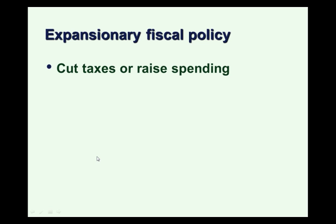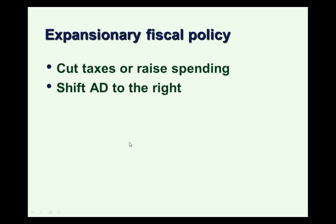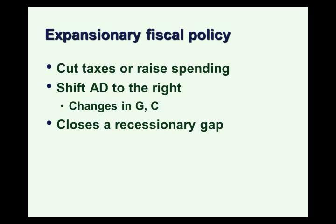Expansionary fiscal policy is designed to expand the economy — in other words, it's going to shift aggregate demand to the right. So it's used during a recessionary gap. Expansionary fiscal policy involves a tax cut or spending increase. This shifts aggregate demand to the right because it could shift government purchases (capital G), which is a component of aggregate demand. It also could affect consumer spending — if we cut taxes, consumers have more disposable income and they're going to spend more. So expansionary fiscal policy would close a recessionary gap.